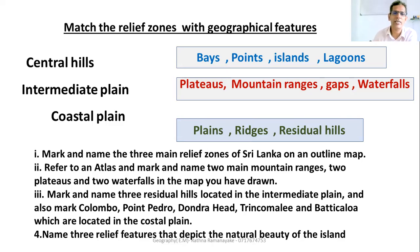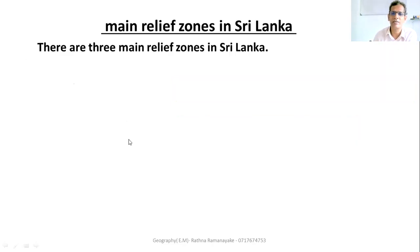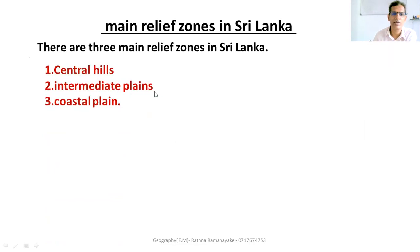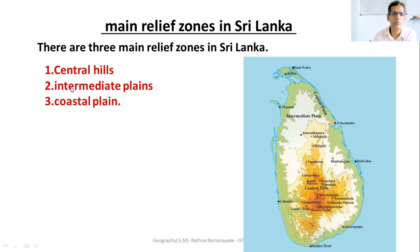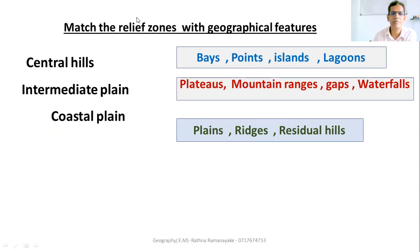Today you got a good understanding about the relief zones of Sri Lanka. Sri Lanka is divided into three relief zones: Central Hills, Intermediate Plains, and Coastal Plains. In Central Hills you can see plateaus, mountain ranges, gaps, and waterfalls. In the Intermediate Plain you can see plains, ridges, and residual hills. In the Coastal Plain you can see plains, islands, lagoons, and mangrove vegetation.